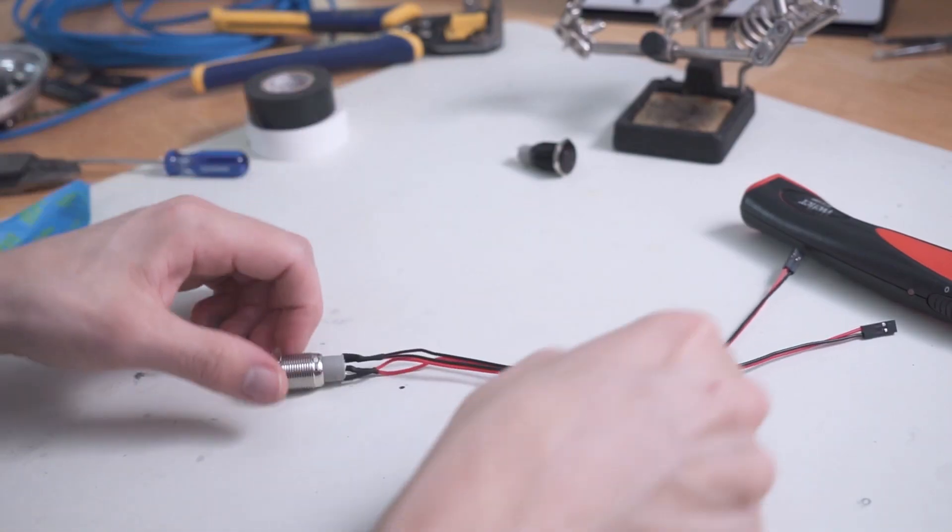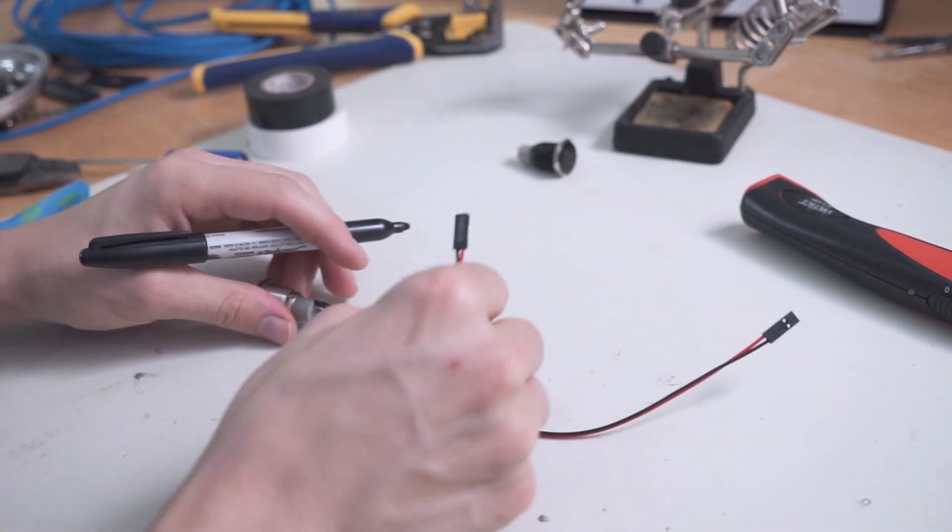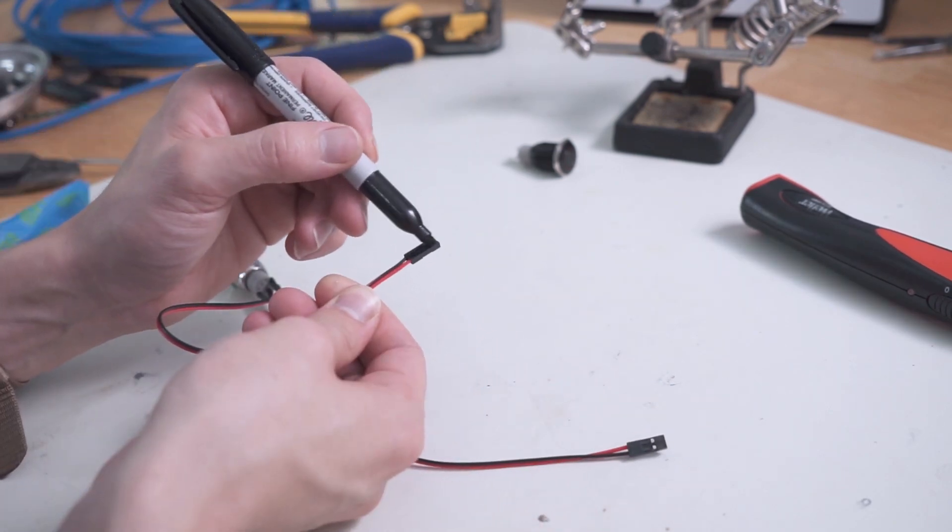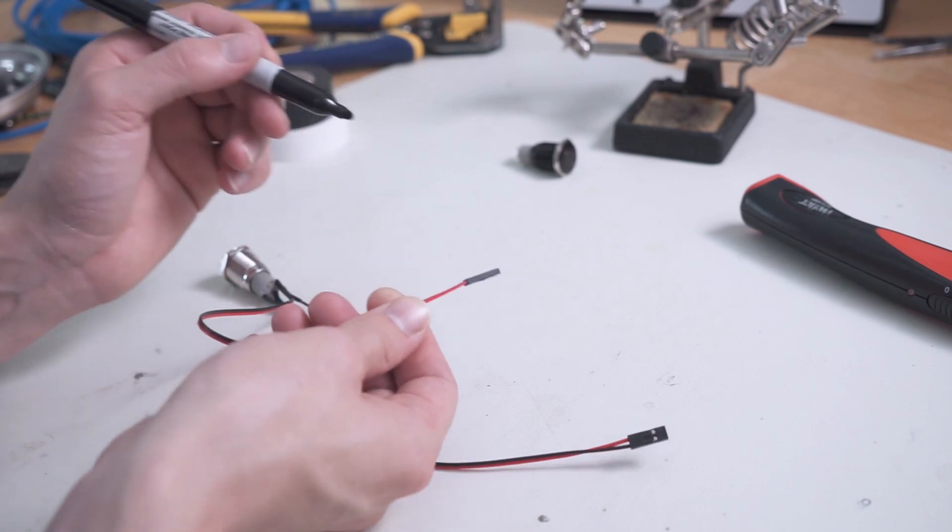Before we move on to the next step, we want to mark the ends of our cables. Find the LED cable and use a Sharpie to cross out the power switch logo on it. After we get done heat shrinking this, we won't be able to tell them apart, so it's important to do this now.